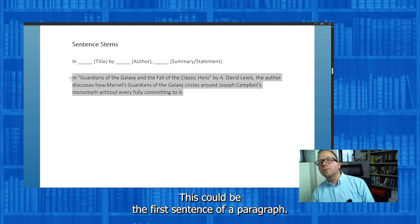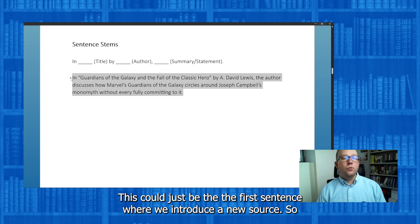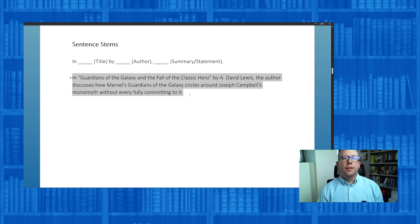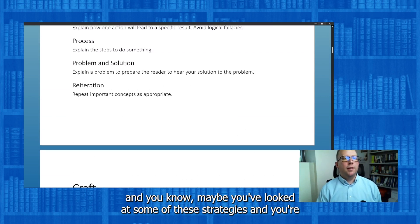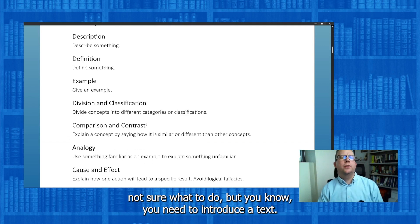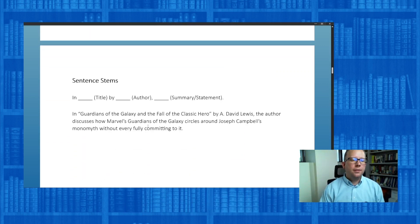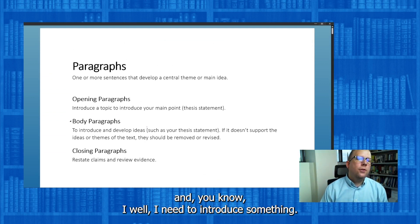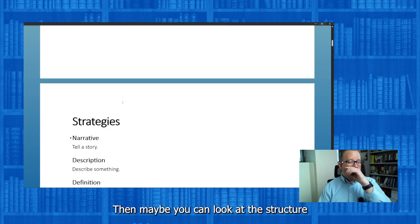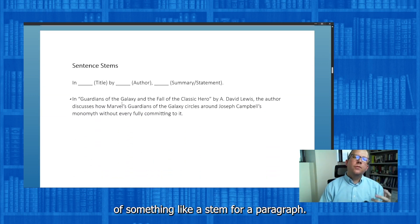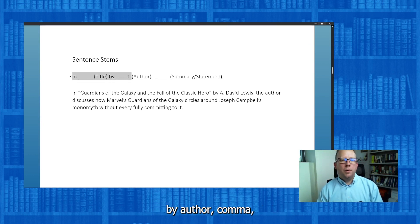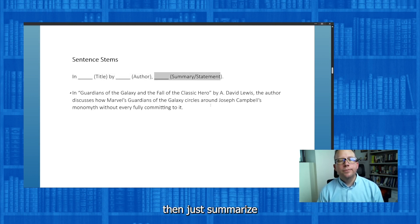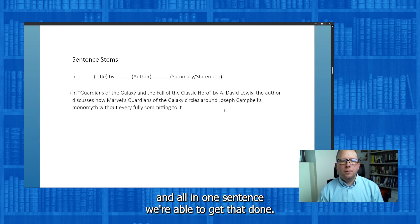This could be the first sentence of a paragraph or just the first sentence where you introduce a new source. So if you're not sure how to start a paragraph and you know you need to introduce a text, look at the structure of a stem: 'In [title], by [author], comma' — then just summarize. All in one sentence, you're able to get that done.